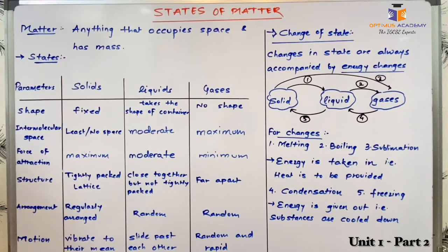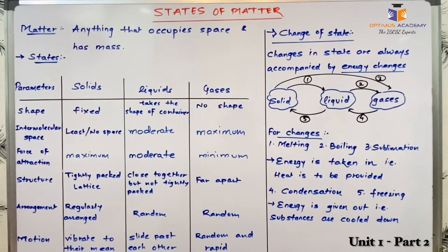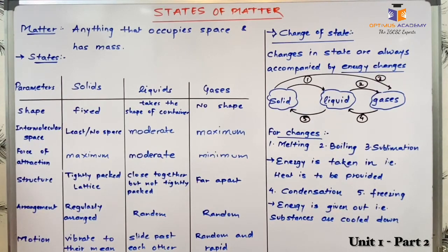The space between the molecules also increases. Going back, when we discussed about solids, we said that in solids in unit volume there are a large number of molecules present. So when we turn solids into liquids, in the same unit volume the number of particles now present will decrease, which also decreases the density of the substance.